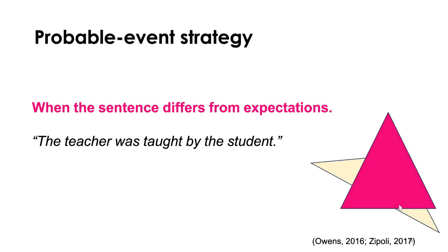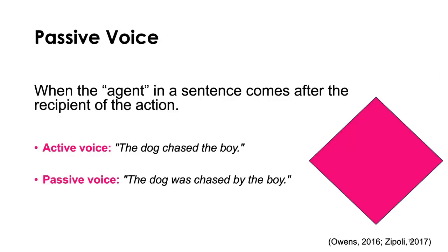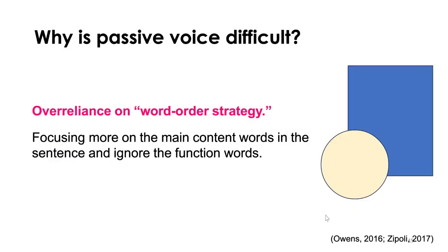Why is passive voice difficult? People who have language processing issues and don't have a solid sense of sentence structure over-rely on word order strategy — they focus more on the main content words in the sentence and ignore the function words. If we look at 'the dog was chased by the boy' and we focus only on the content words, ignoring 'was' and 'by,' we would misinterpret that message. This is because content words tend to be things you can easily visualize, so people tend to resort to word order strategy — but it can result in comprehension breakdowns.